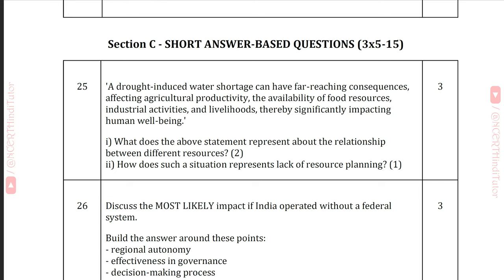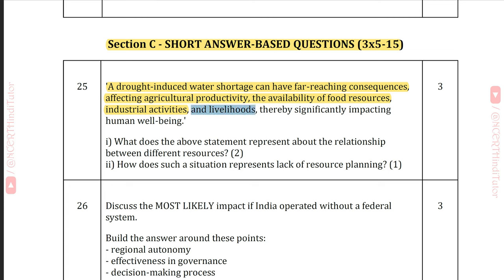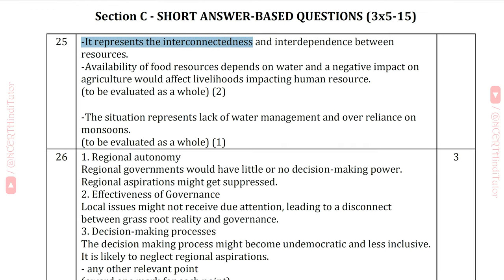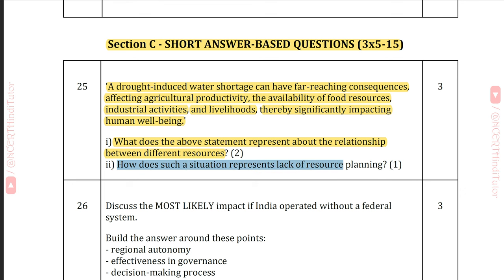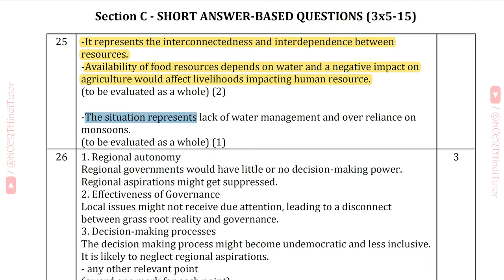We have completed Section B. Now let's move on to Section C — short answer based questions carrying three marks each. Question 25: A drought-induced water shortage can have far-reaching consequences, affecting agricultural productivity, food resources, industrial activities and livelihoods. First, what does this represent about the relationship between different resources? Answer: It represents the interconnectedness and interdependence between resources — food availability depends on water, and negative impacts on agriculture affect livelihoods and human resources. Second, how does such a situation represent lack of resource planning? Answer: It represents lack of water management and over-reliance on monsoons.